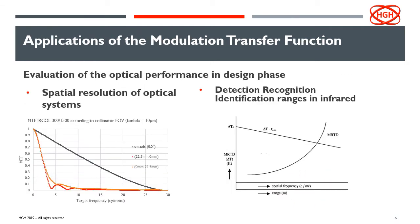What are the different applications of MTF? First, it enables us to evaluate the spatial resolution of an optical system. Here is an example of MTF curves for one of our collimators at different field of views. We have the on-axis MTF, which is very close to the diffraction limit, and as we go into the field of view, we have slightly degraded MTF curves.